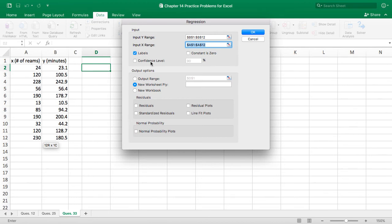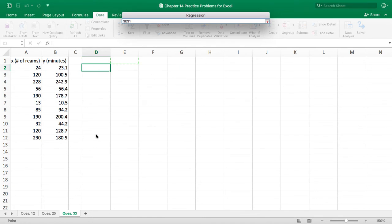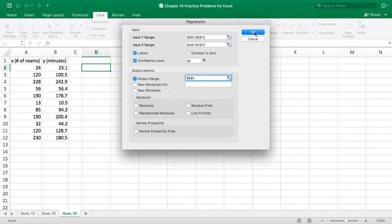And then for our confidence level, recall that in the problem, it asks for a significance level or alpha of 0.10. But the way the menu asks for it is set up as the confidence level. So the confidence level and the alpha or significance levels are complements of each other. So because our significance level was 0.10, that means our confidence level is 90% or 0.90. And then for my output range, I'm going to go ahead and keep it on the same page by clicking on the output option and then choosing a blank area to have it populate. So you just have to select one cell and that's where it will start from. I'll go ahead and click OK.